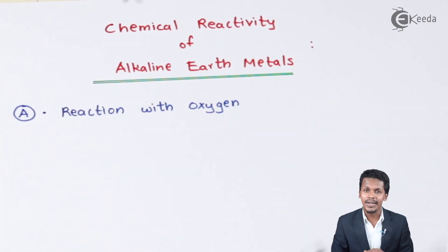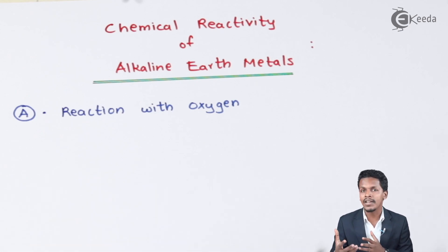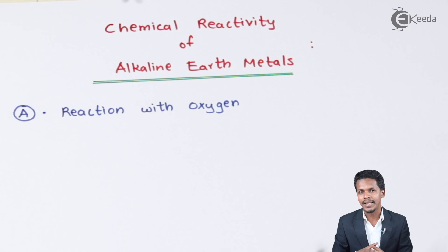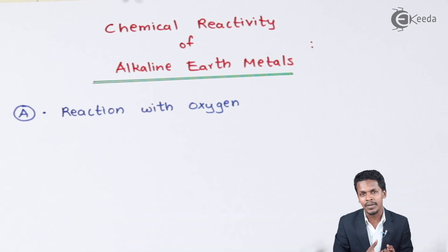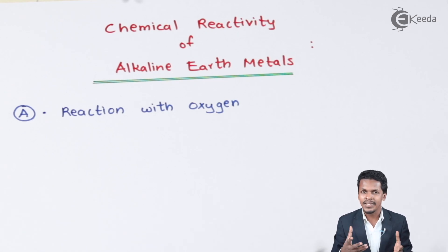Group 2 elements have a lower ionization enthalpy compared to group 1 alkali metals. Even though they have low ionization enthalpy, they are still reactive towards oxygen. Most metals of this group, like beryllium and magnesium, are kinetically inert but can still form oxides. When burning, these metals like magnesium produce a very bright illuminescence.